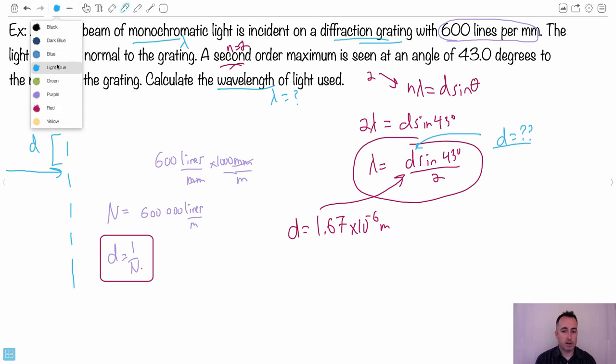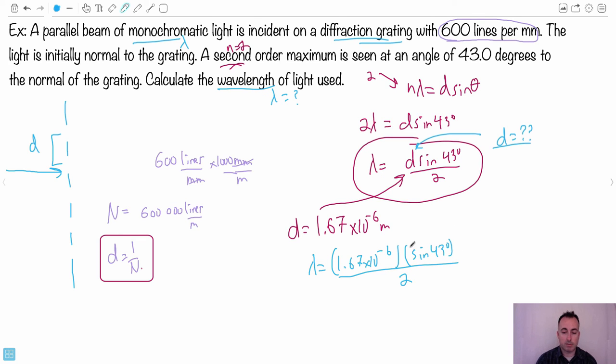So I end up with, maybe I'll do it in a different color. Before I get lambda equals D, which is 1.67 times 10 to the minus 6 meters times sine of 43. I may need to make sure that's in degree mode. So make sure my calculator is in degree mode and divide that by 2. So I'm going to check my mode on my calculator and make sure I'm in degrees, which I am. So I'll just sine 43. That times 1.67 times 10 to the minus 6. I get that answer. I take that divided by 2. I end up with a wavelength is 5.69 times 10 to the minus 7 meters.